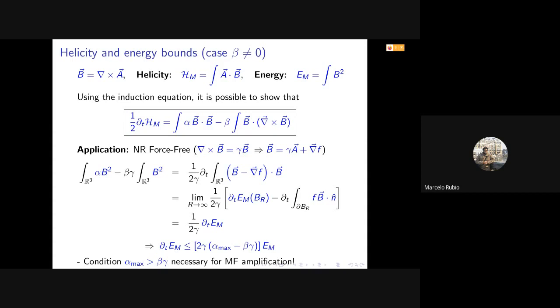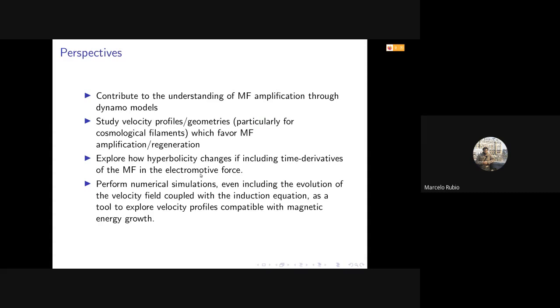So just to conclude, the idea is to contribute to the understanding of magnetic field amplification through these dynamo models. The idea is to continue working and, in particular, study some velocity profiles or geometries which are in favor of magnetic field amplification, of course starting from a well-posed and stable theory. Also, we would like to explore how hyperbolicity changes when including terms in which time derivatives of the magnetic field also appear. It would change dramatically the principal part of the system, so it's worth studying that.